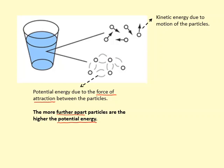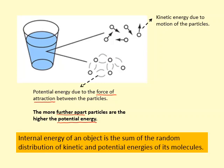So substances have two types of energy: kinetic energy and potential energy. When you put them together, you get what we call internal energy of the object. So internal energy is the sum of the random distribution of kinetic energy and potential energy of all the particles that make up that substance.